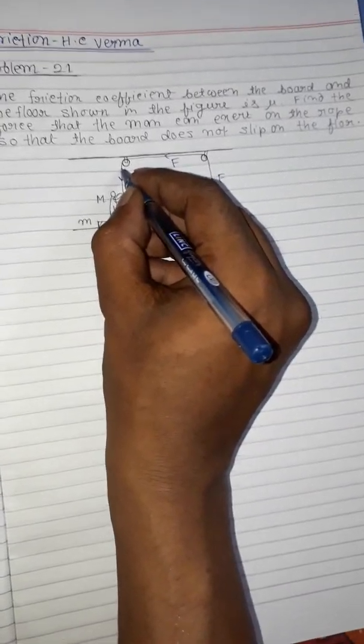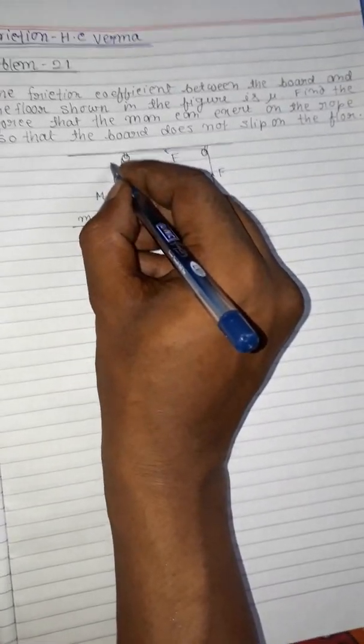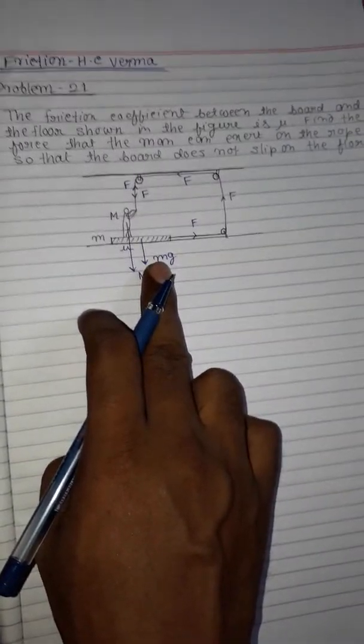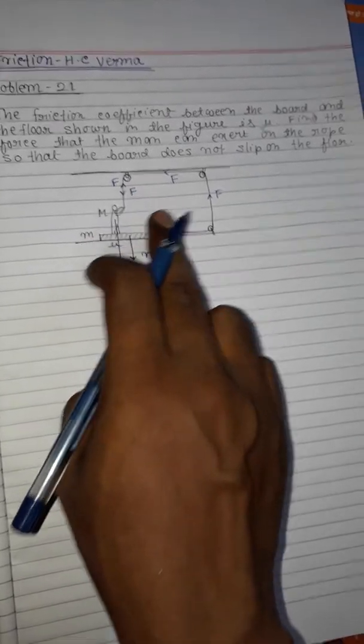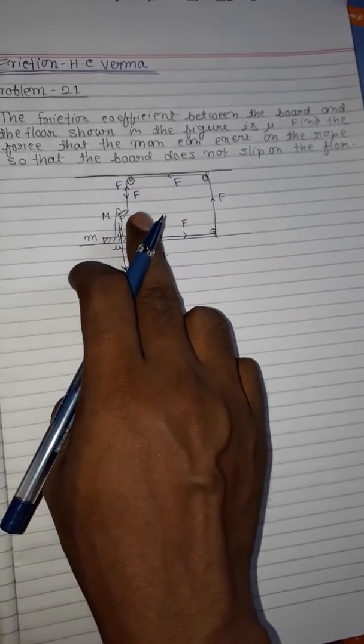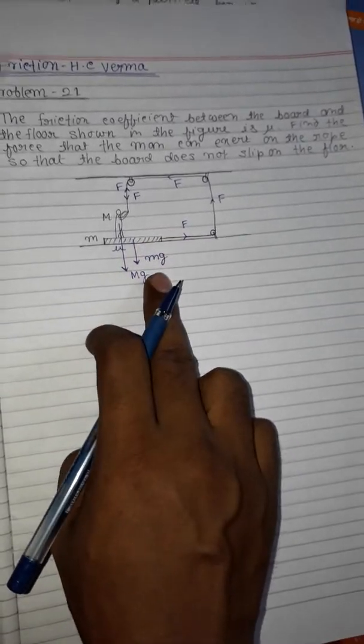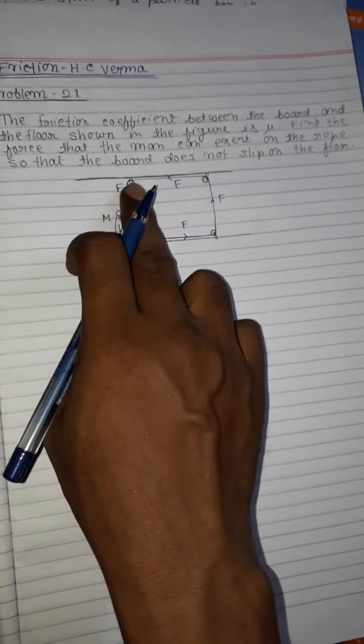The rope will also exert a force equal and opposite according to Newton's third law of motion. This force is F upward, so the weight of the man will be reduced by an amount F.